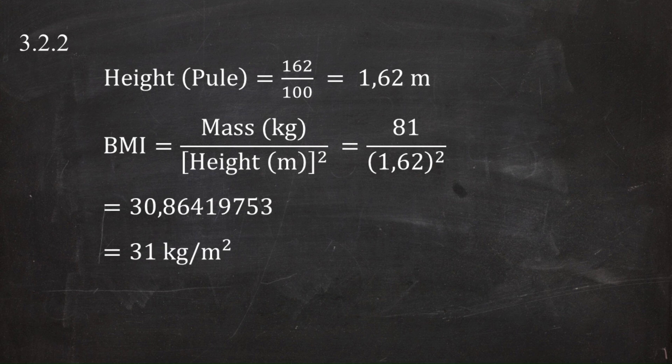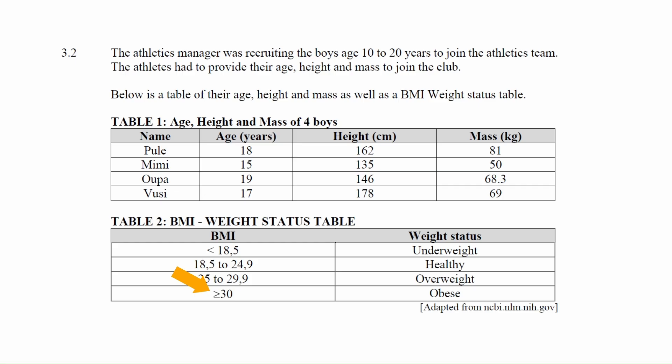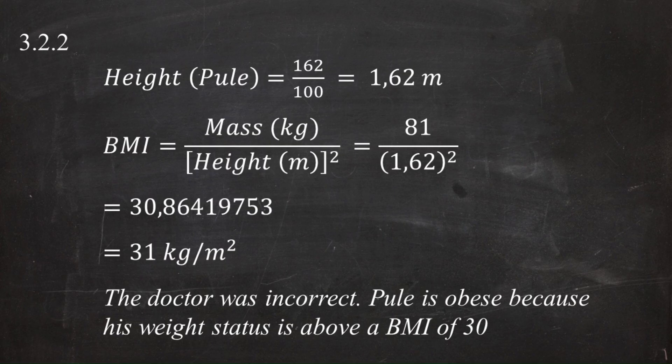Rounding to the nearest whole number gives a BMI of 31 kg/m². From Table 2, a BMI greater than 30 kg/m² is classified as obese. Therefore, the doctor was incorrect to classify Pule as overweight — by calculation, his BMI status shows he was actually obese.